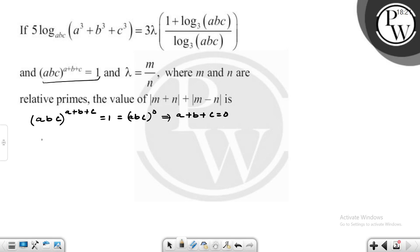We know that a³ + b³ + c³ - 3abc equals (a + b + c)(a² + b² - ab - bc + c²).